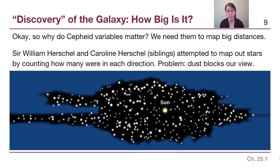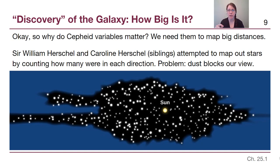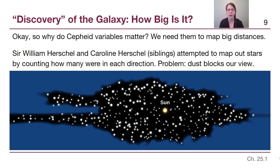Cepheid variables matter because they allow us to map even larger distances than parallax would allow. One of the first attempts to map our place in the larger structure was by the siblings Sir William Herschel and Caroline Herschel, who attempted to map out stars by counting how many they saw in every direction. The major problem they had to deal with is that dust blocks our view of more distant stars, giving us a kind of fog of war — we haven't really explored that map, but that doesn't mean there aren't stars further out there.